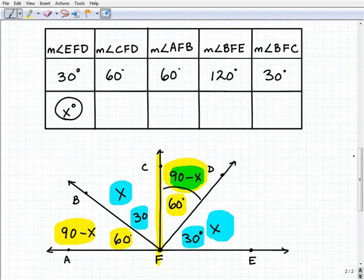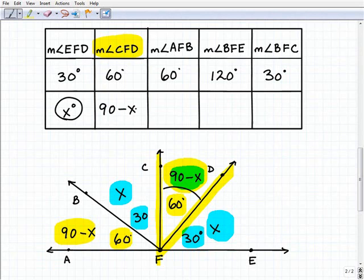Now we need to go back and look at our chart. Measure of angle CFD: that would be 90 minus X degrees. The measure of AFB is also 90 minus X.